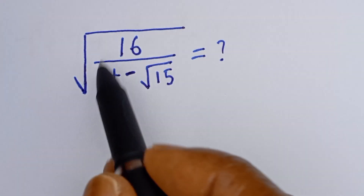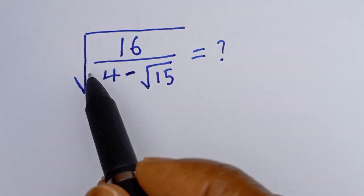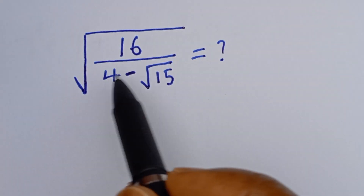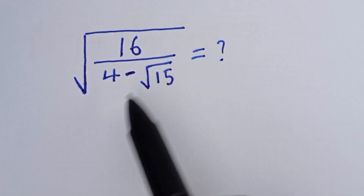Hello, how to evaluate this smart problem: square root of 16 divided by 4 minus square root of 15.